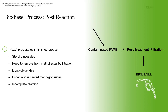You may also have hazy precipitates found in the finished product — those could be sterile glucosides or some saturated monoglycerides. These need to be removed as well during the process. The good thing about using an adsorbent to remove the other contaminants is that it will remove the sterile glucosides at higher temperatures, so you don't have to cool the biodiesel down to precipitate those products out — you can do that at temperature and they'll be removed as well.